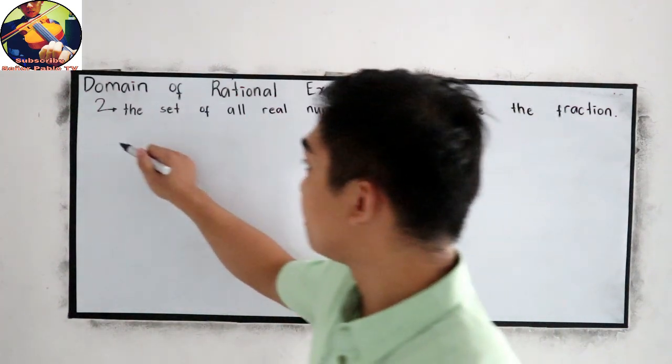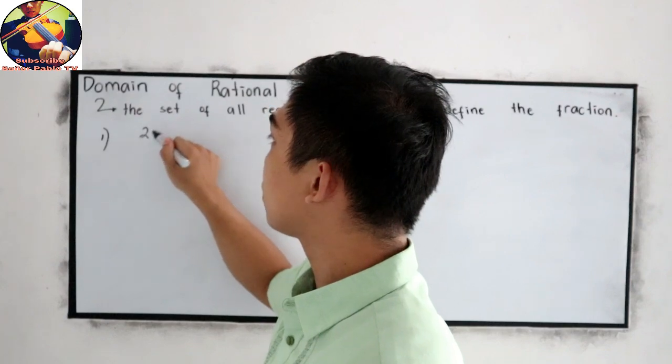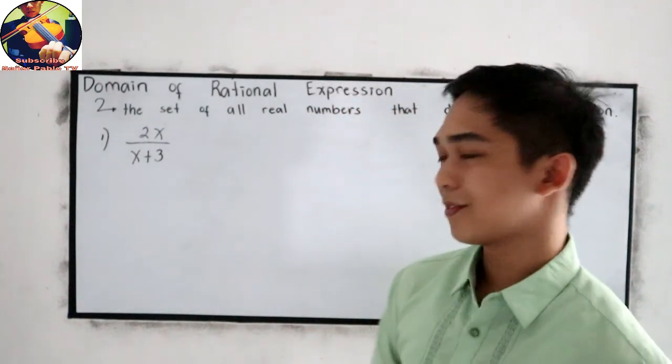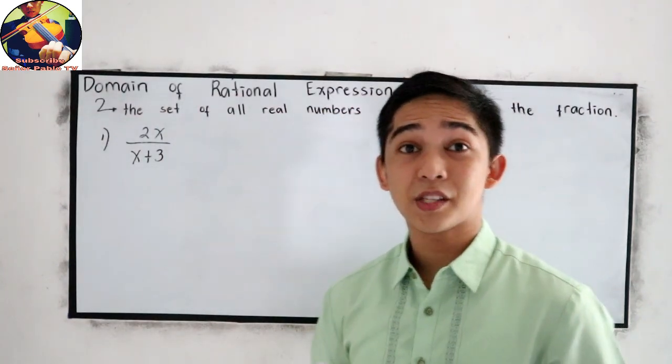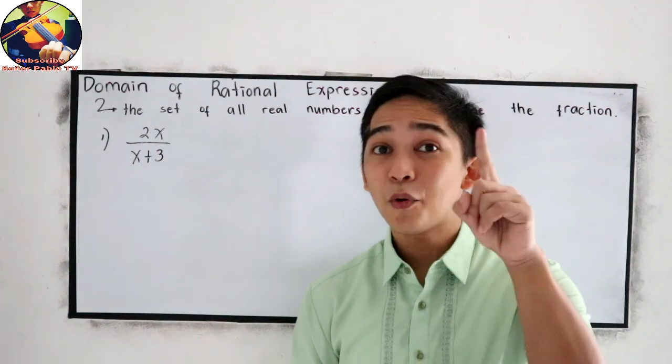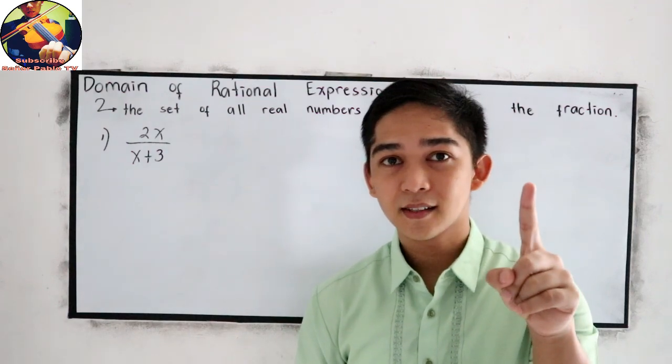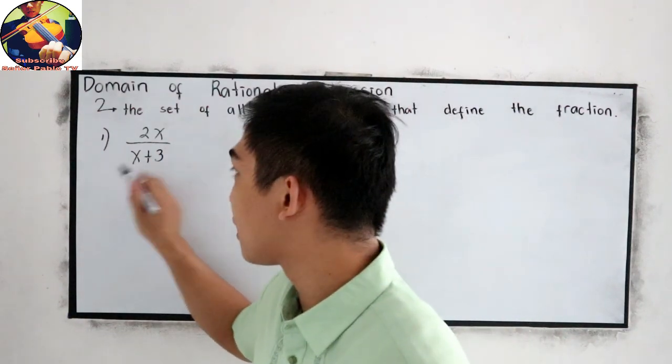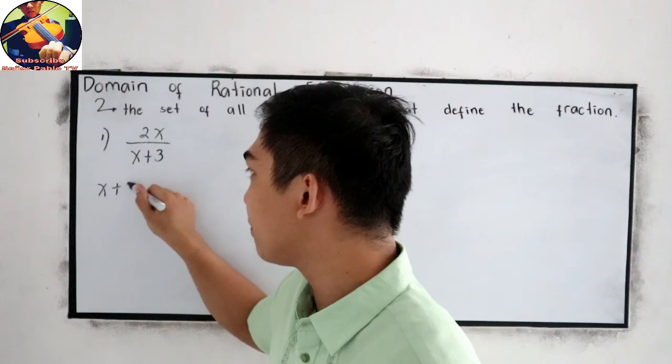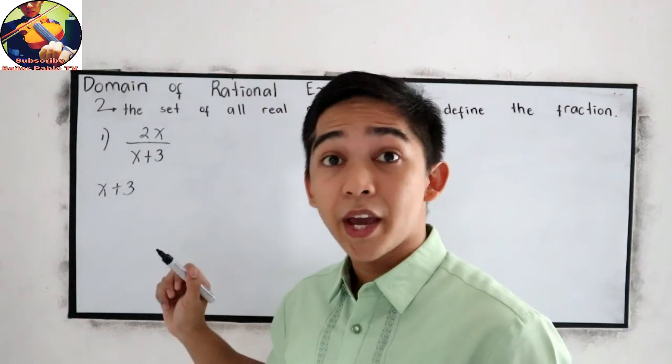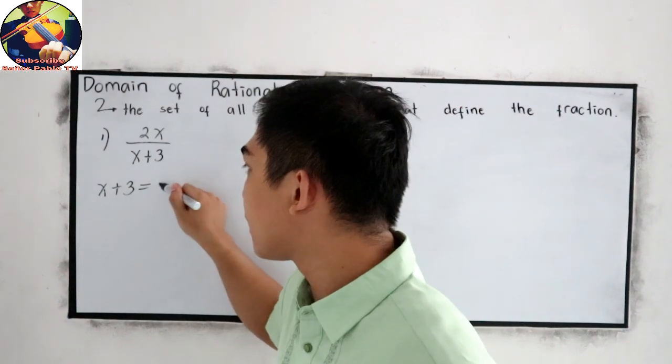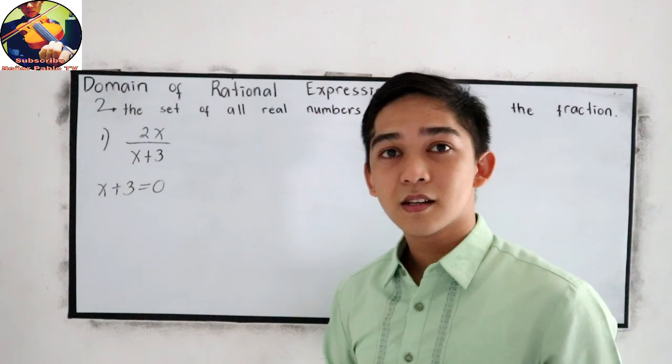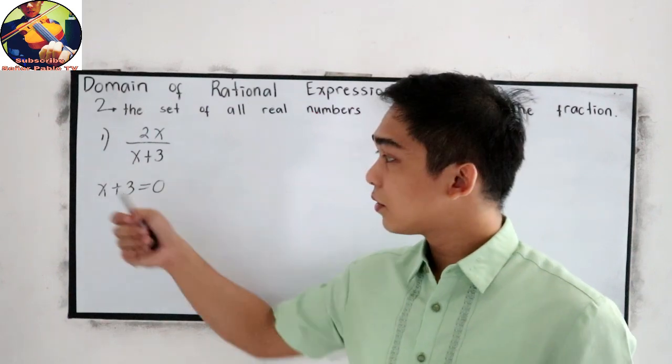Number one, let's say 2x over x plus 3. We are going to find the restricted value. Our first step is focus on the denominator. So the denominator is x plus 3, then equate to 0. Next, solve for x.